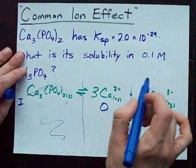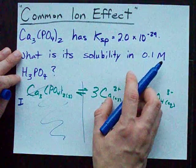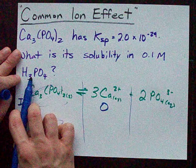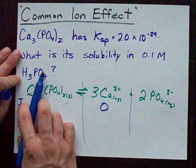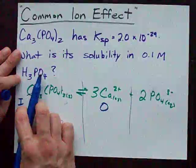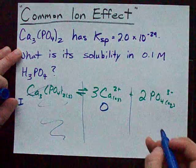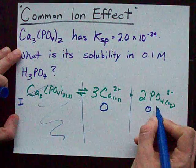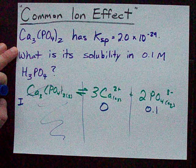But we were told we started with 0.1 moles per liter of H3PO4. That dissolves to give me a PO4 in solution already. So I'm starting with 0.1 moles per liter of phosphate.